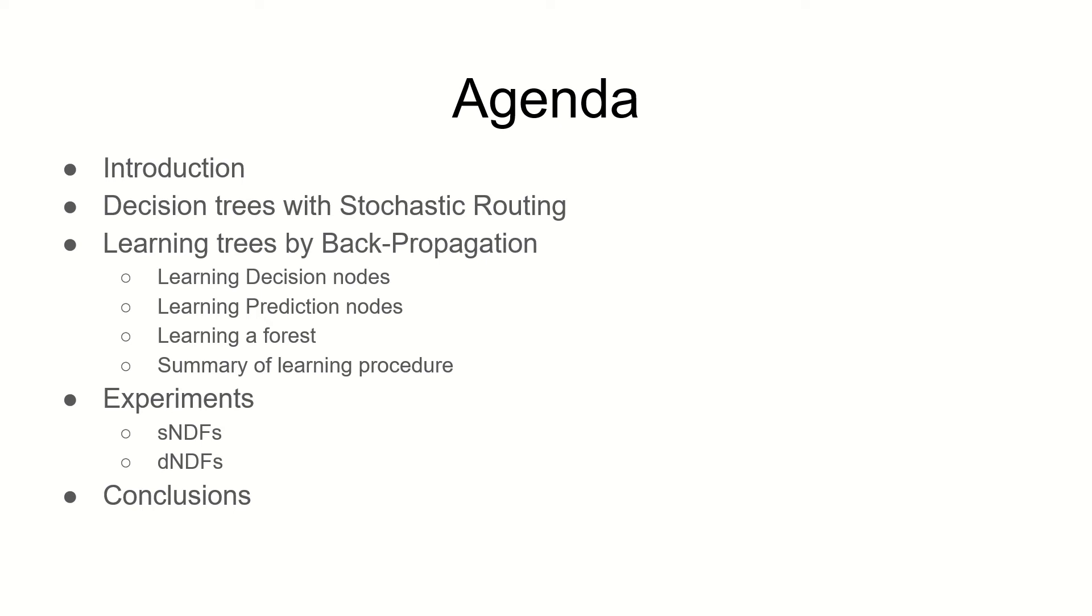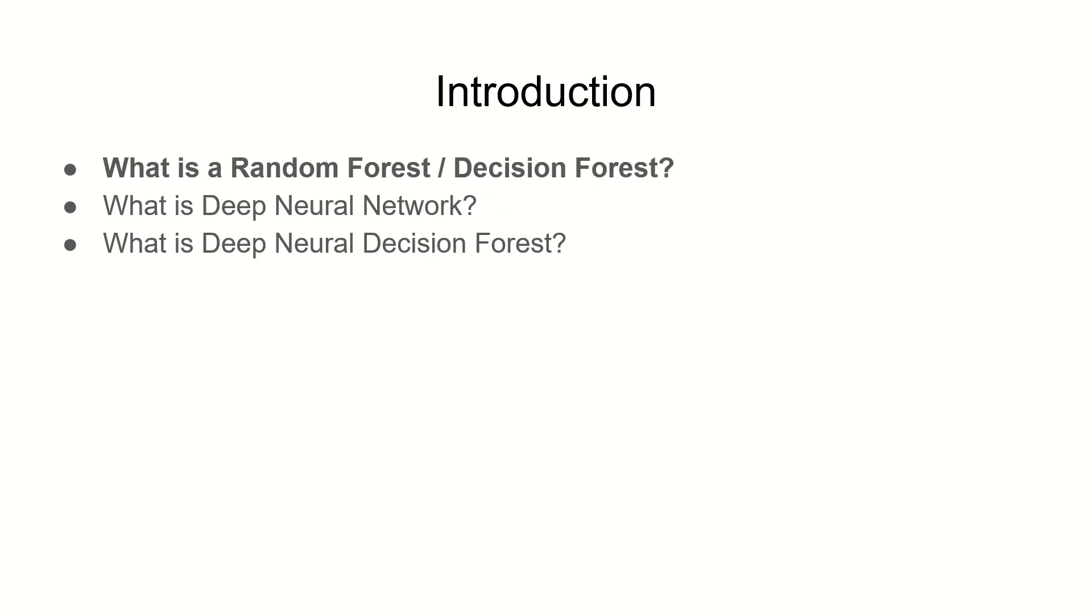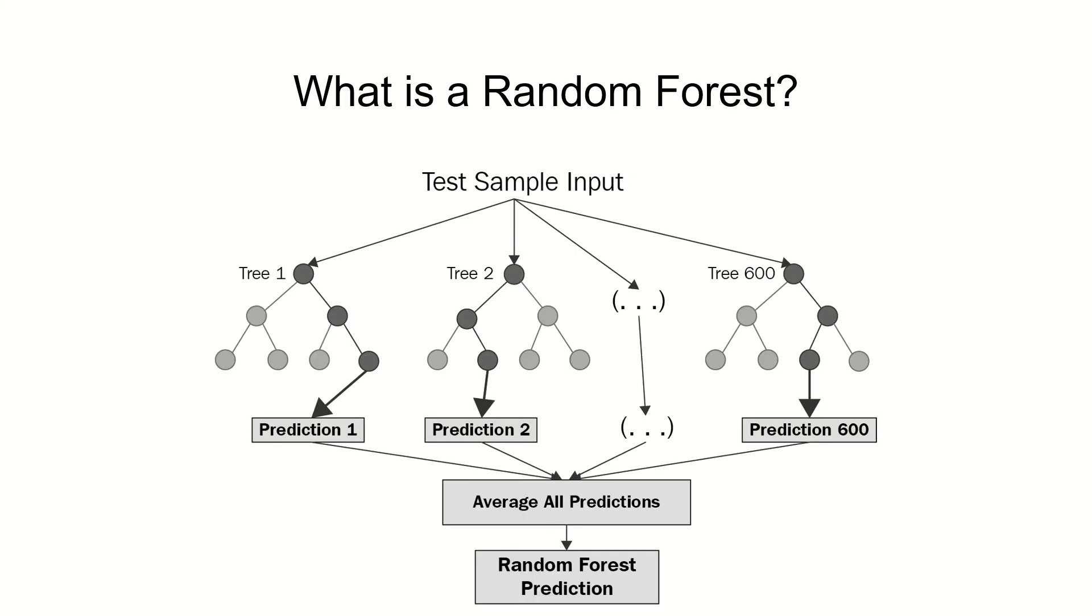Let's start by breaking down the title. What is random forest or a decision forest? It is a multitude of interconnected decision trees, each of which is going to make a prediction for the given sample input. In the end, all of those predictions will be averaged to get the random forest prediction.